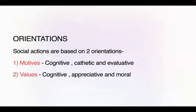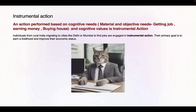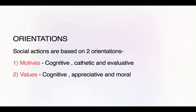He said that every social action has two orientations: one is motive, and the second is values — the norms and right-and-wrong judgments in your mind. Motives can be of three types, and values can also be of three types. The first motive is cognitive, based on material and objective needs — wanting to earn money, gain employment, buy a car, or build a house. The second is cathartic — self-fulfilling and emotional — like watching a cricket match or going to a temple. Evaluative motive is self-evaluative, based on the moral values of society and larger good, not just personal needs. Civic virtue is a type of evaluative motive. Corresponding values are: cognitive value, appreciative value, and moral value.